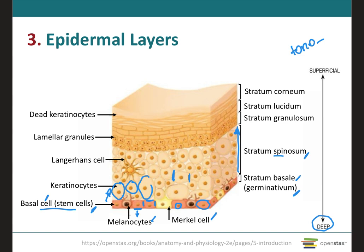In addition to the keratinocytes, there are going to be intraepidermal macrophages, which are called Langerhans cells, and we can also see the projections of the melanocytes in the stratum spinosum. The cell body of the melanocytes is actually present in the stratum basale, but their projections go up to the stratum spinosum and sometimes all the way to the stratum granulosum, which is the next cell layer we will be talking about.